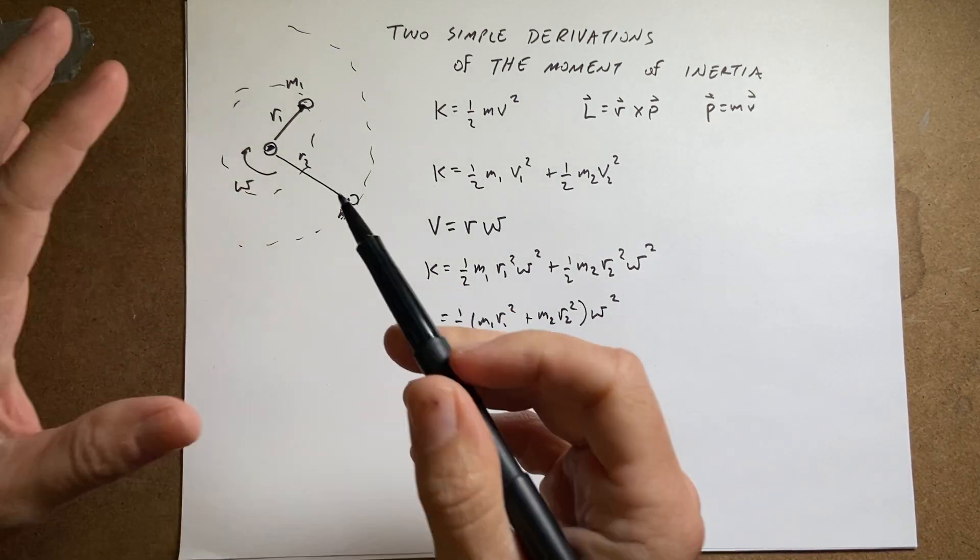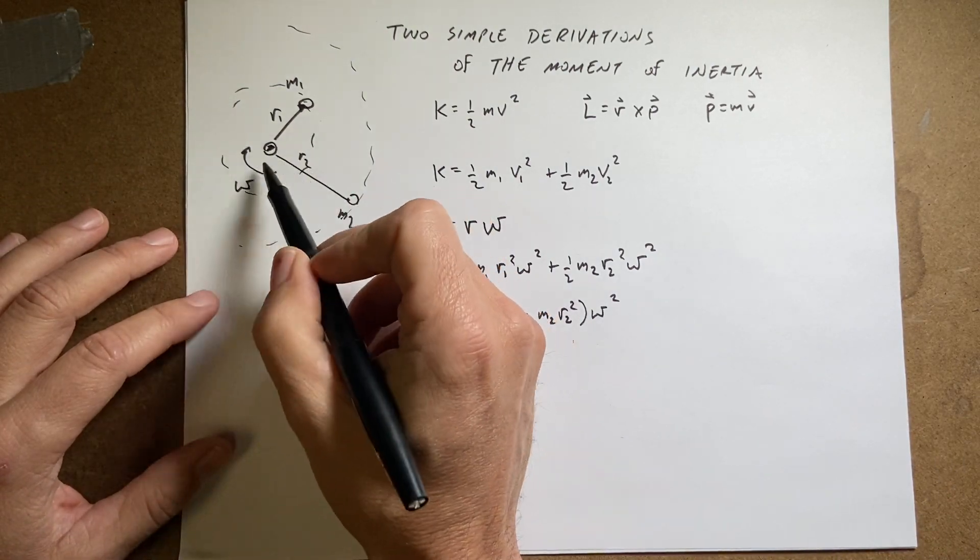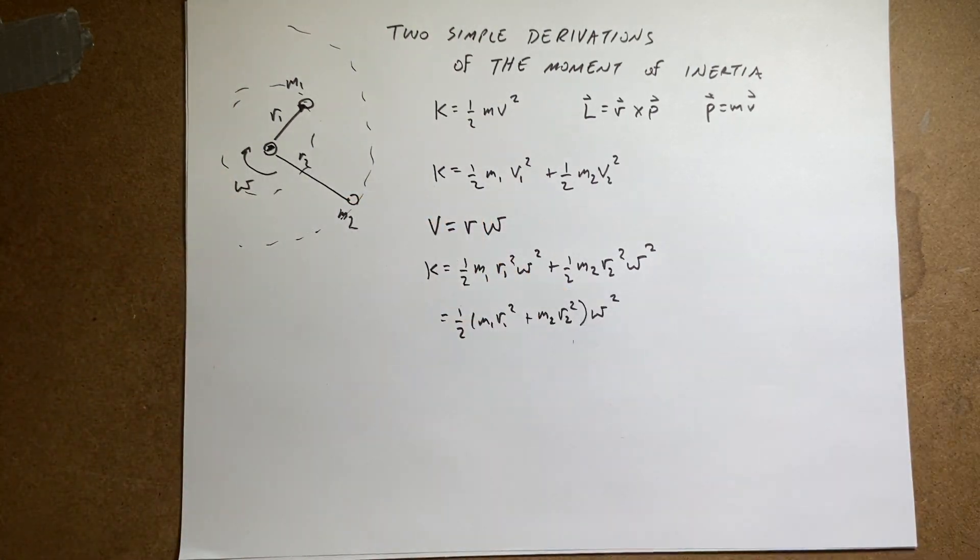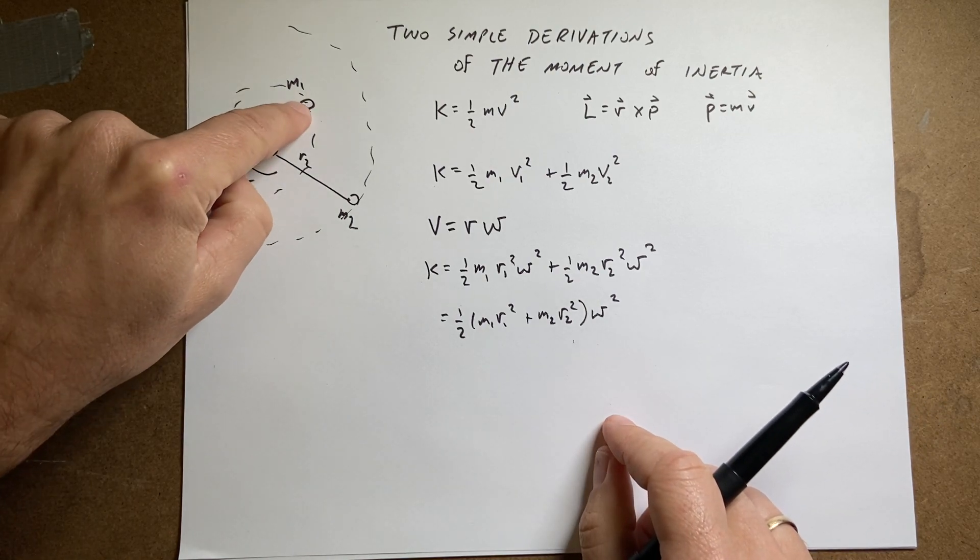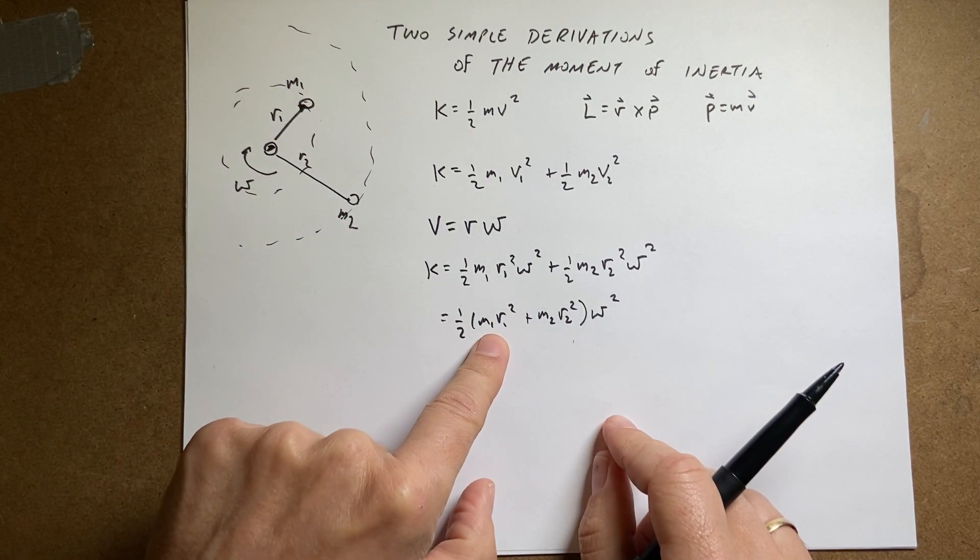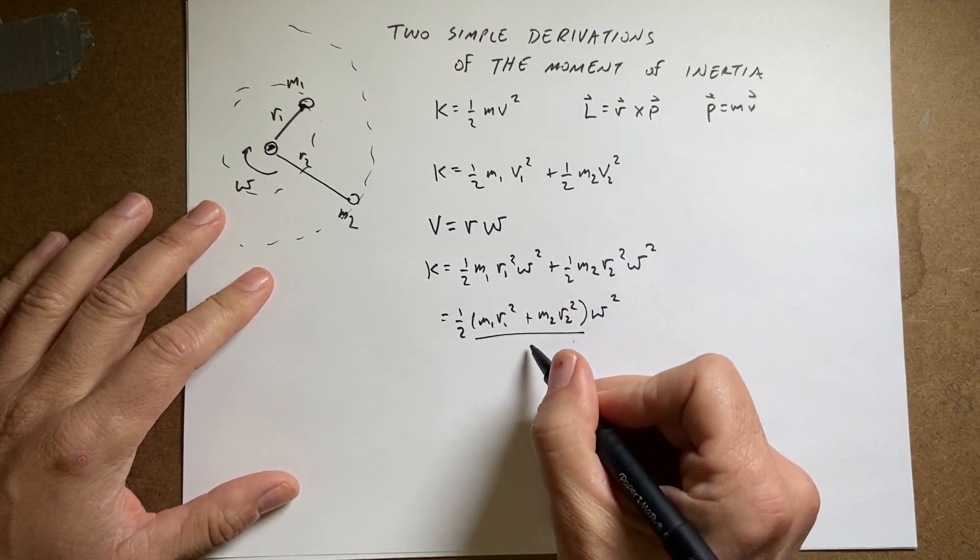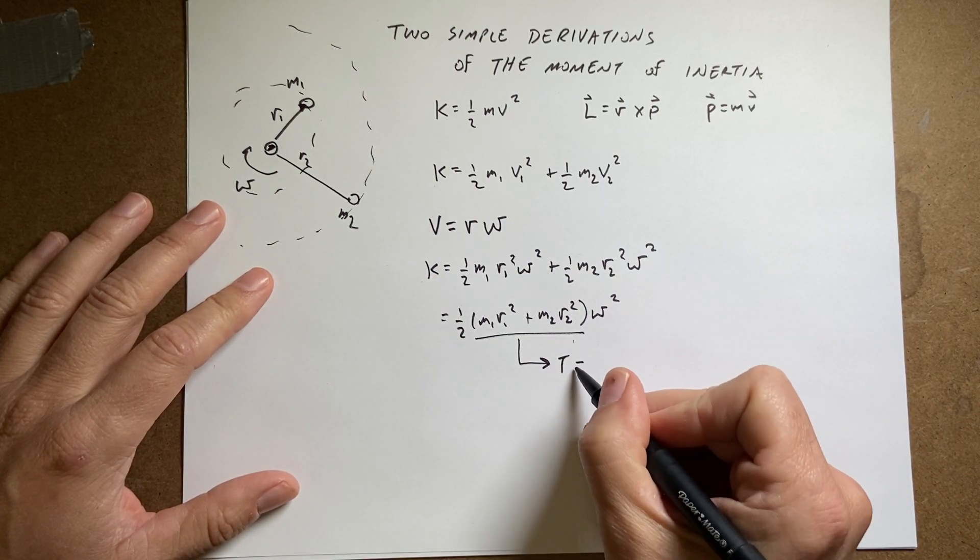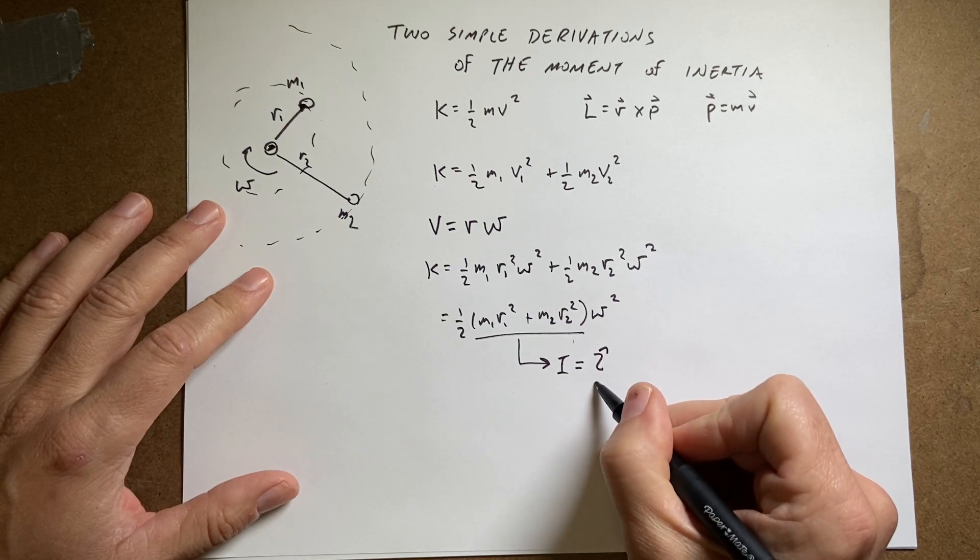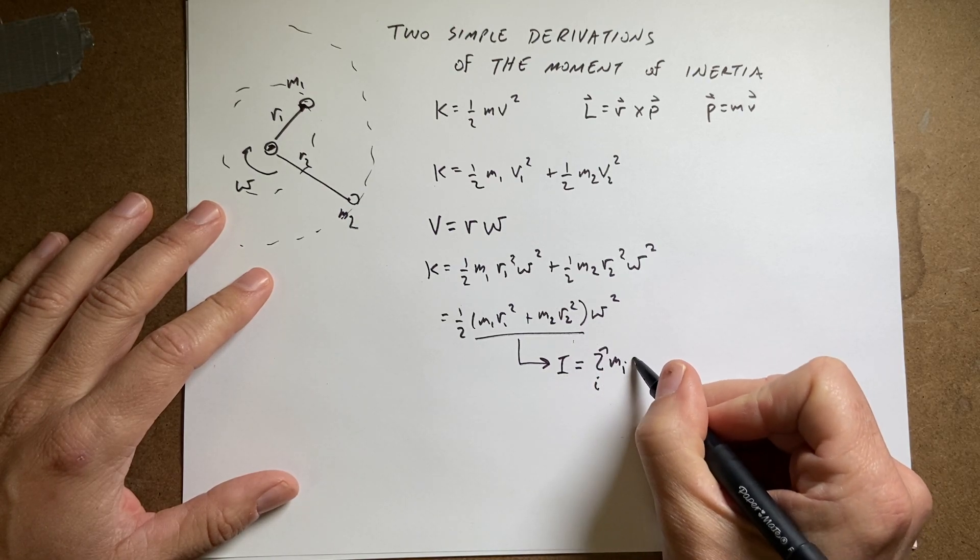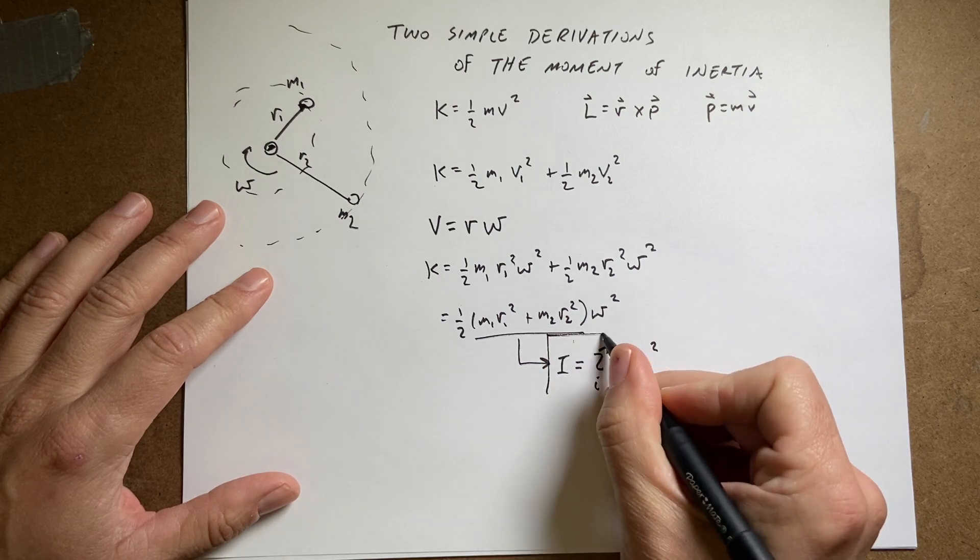Now imagine that I have even more masses in here. I can have as many as I want. As long as I know their radius and their mass, I can find their component m1 r1 squared and just add them up. So I'm going to call this i, the moment of inertia. And we could write that as the sum over i of m i r i squared. That's the moment of inertia.